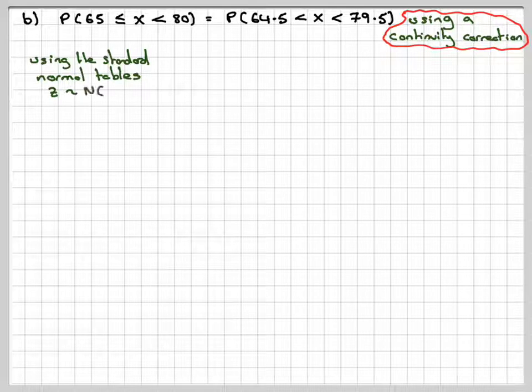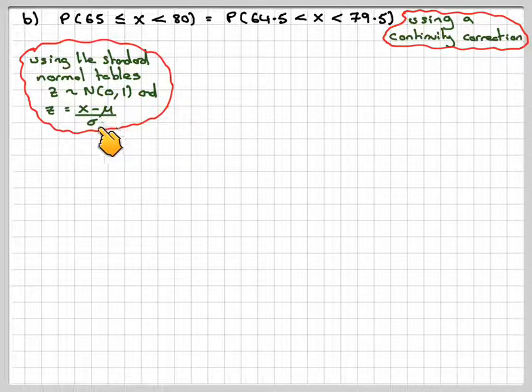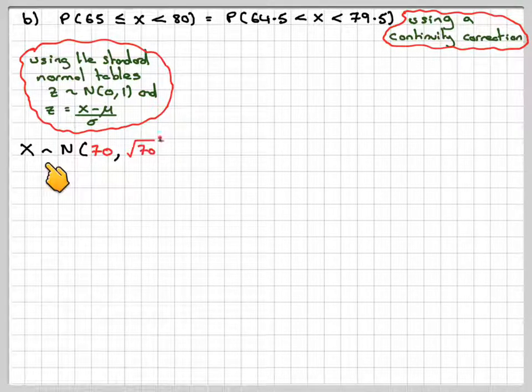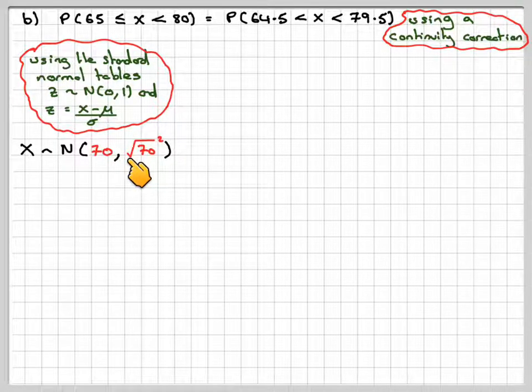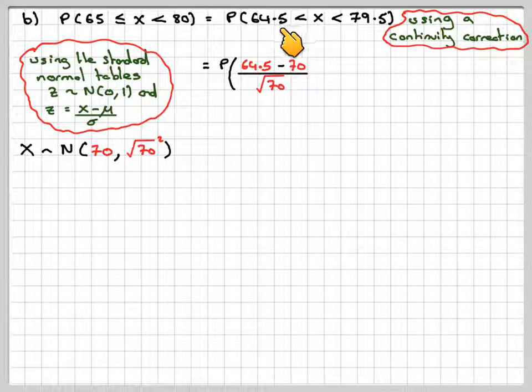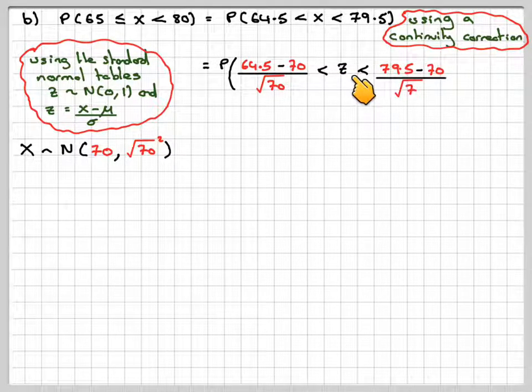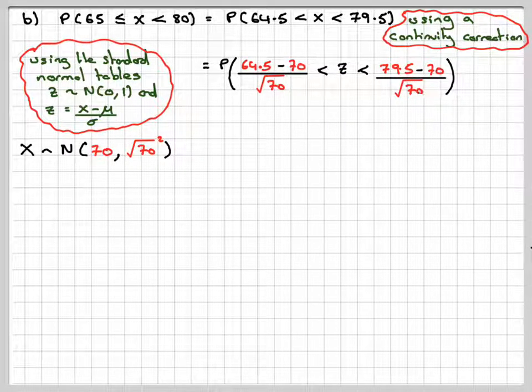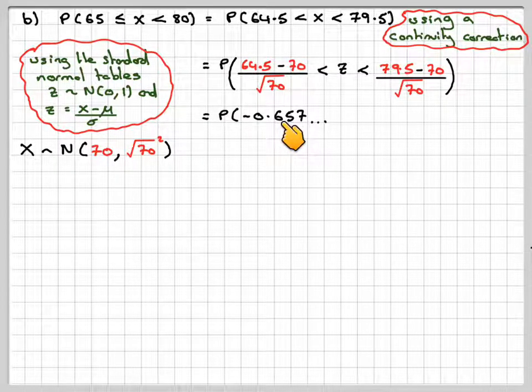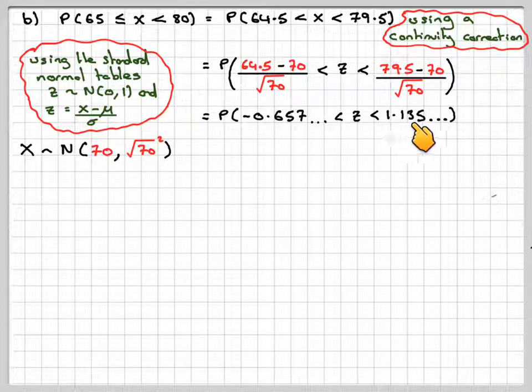Using the standard normal tables, Z being normally distributed with mean 0 and variance 1, and Z is X minus the mean divided by lambda. We apply this to each of these probabilities. 64.5 minus 70 over the square root of 70, Z is greater than that but less than 79.5 minus 70 divided by the square root of 70. That gives me minus 0.657, Z is greater than and less than 1.35.